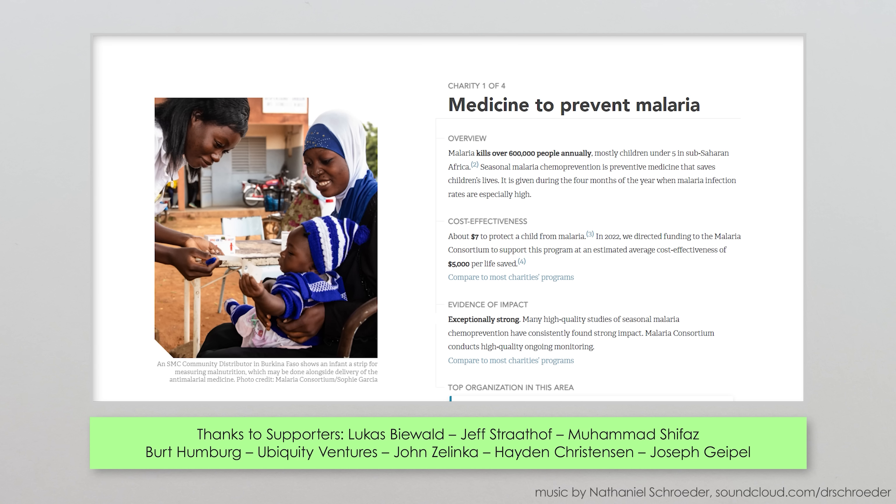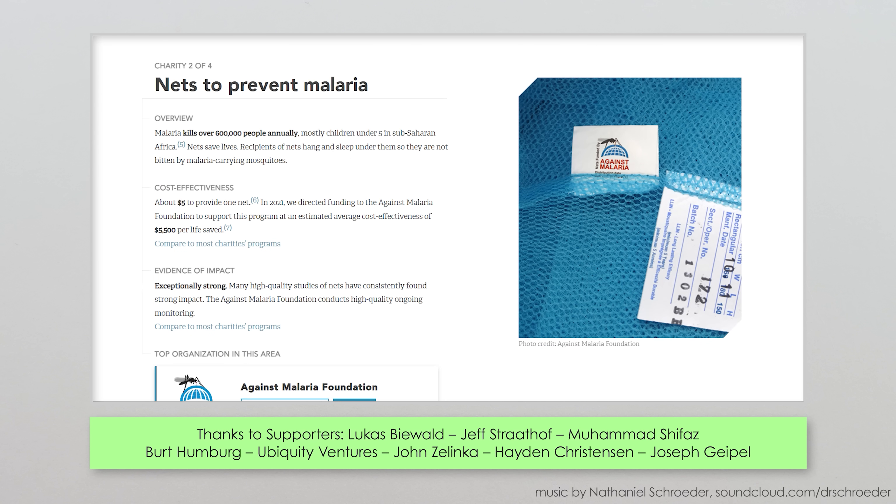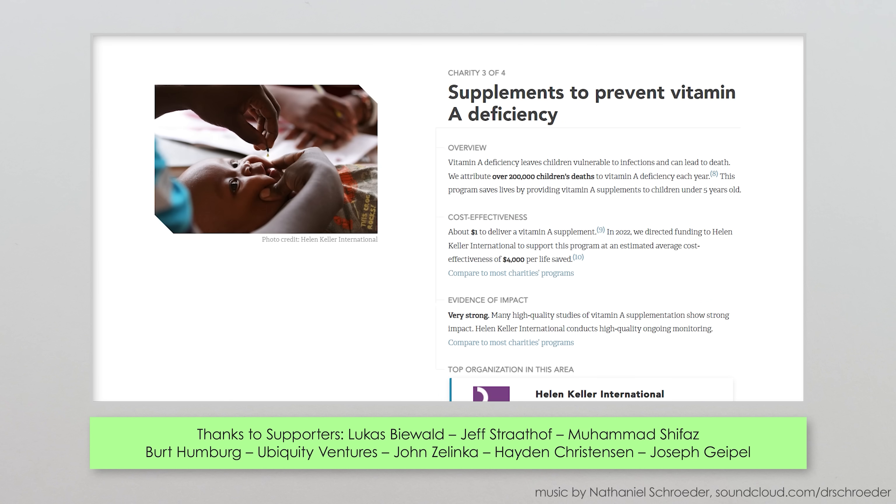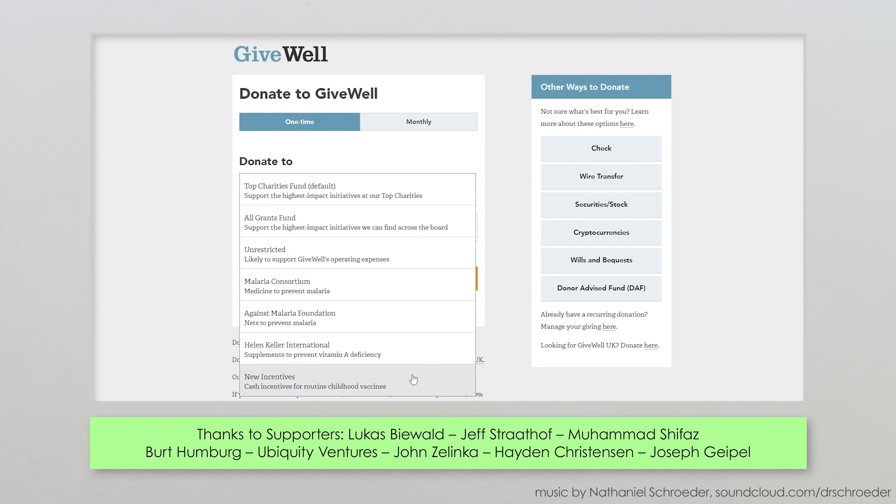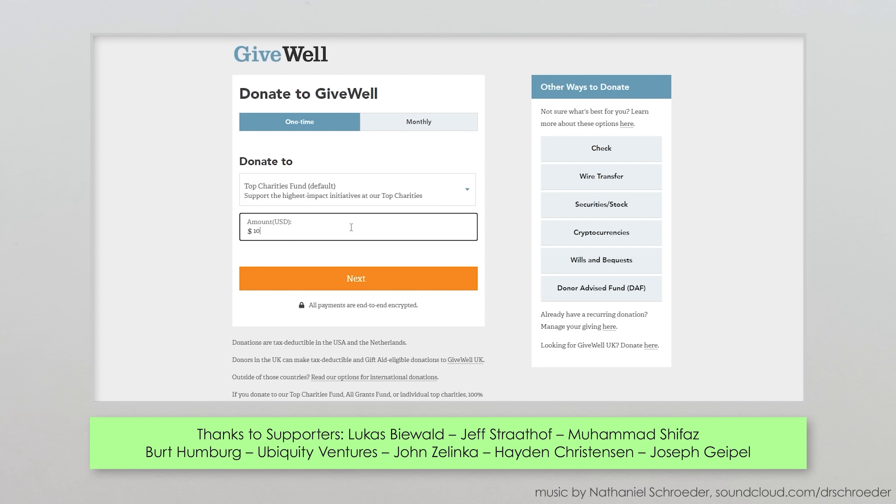You can look at GiveWell's full charity recommendation list on their website. The list currently includes both the Against Malaria Foundation and Helen Keller International. And you can also give directly to any of those charities or to a fund directed to the current top choices through GiveWell.